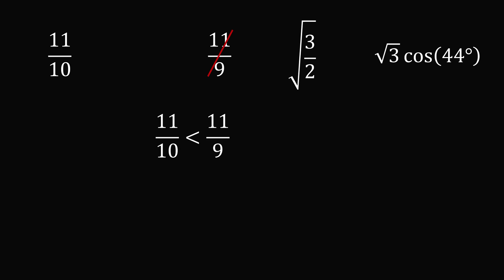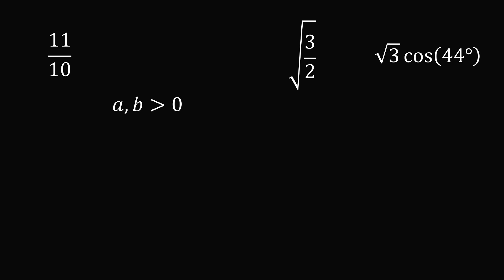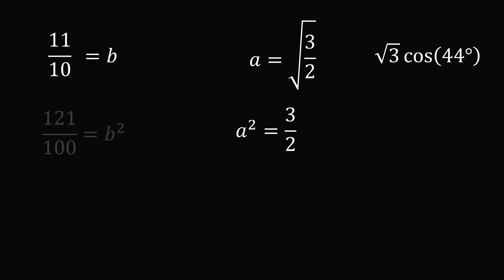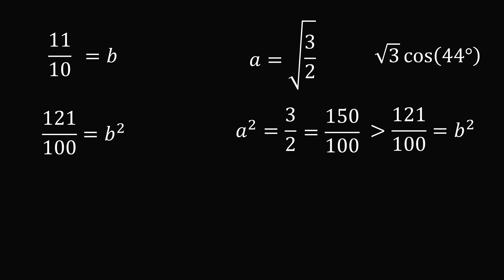11 over 9 cannot be the smallest number. How does 11 over 10 compare to the square root of 3 over 2? Rather than comparing the two numbers directly, let's compare their squares. If two numbers a and b are greater than 0 and a squared is greater than b squared, then a is greater than b. Let a equal the square root of 3 over 2 and b equal 11 over 10. A squared is 3 over 2, and b squared is 121 over 100. Rewriting a squared as 150 over 100, since 150 is greater than 121, a squared is greater than b squared, so a is greater than b — the square root of 3 over 2 is greater than 11 over 10.